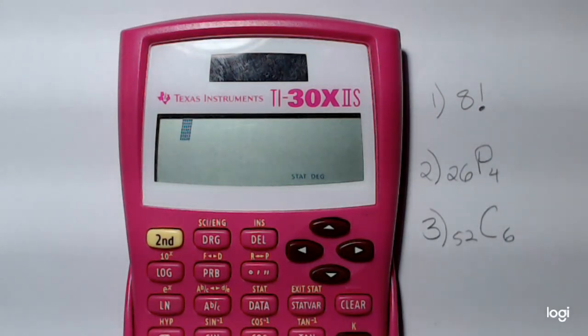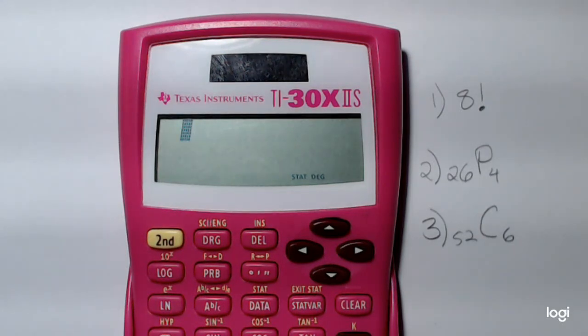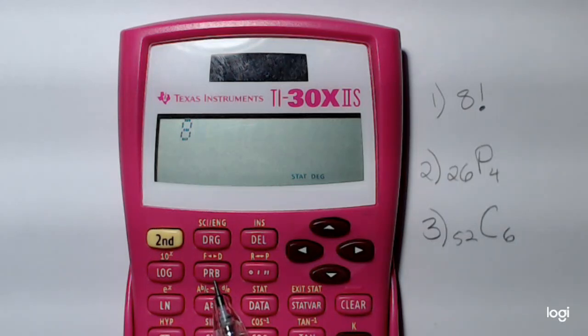For the first example, let's find 8 factorial. What you want to do is enter in 8 first, the number first, and then go to your probability button, this PRB, right here, right next to the log button.